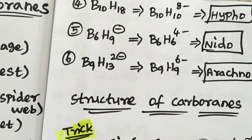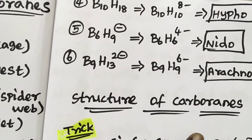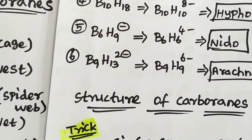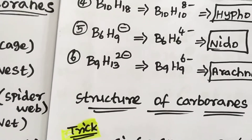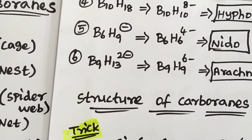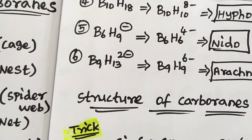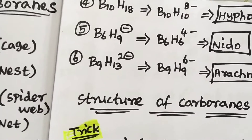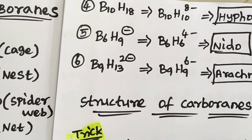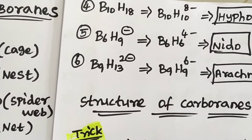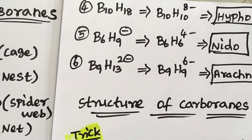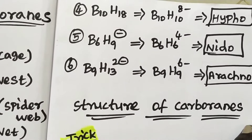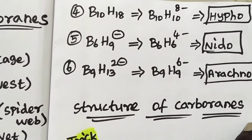Now we go to the next topic: the structure of carborane. Carborane involves borane with some heteroatoms. Let's look at how to determine the structure of carborane.